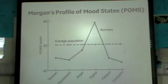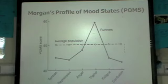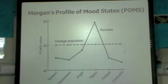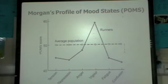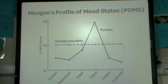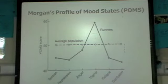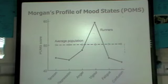We can criticize this research in several ways: the questionnaire may be limited; it actually measures mood rather than personality, and mood is highly changeable. Also, some elite performers do not show the iceberg profile and some non-elite performers do. Additionally, the questionnaire may not be sport-specific, and it could be argued that it's obvious — if you're suffering from tension, confusion, and depression, you were unlikely to be an elite performer anyway.